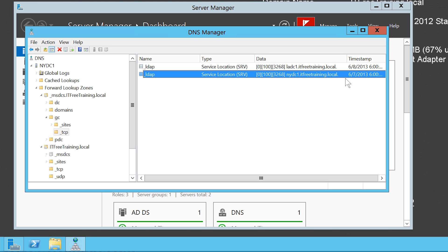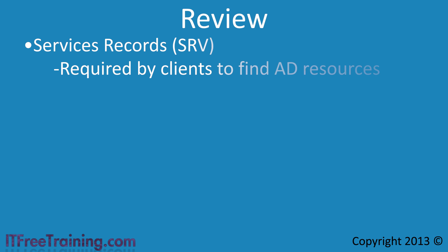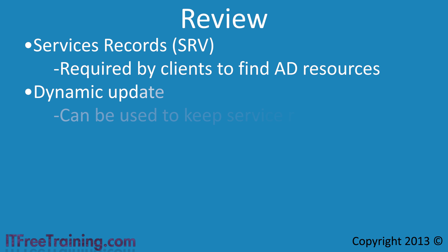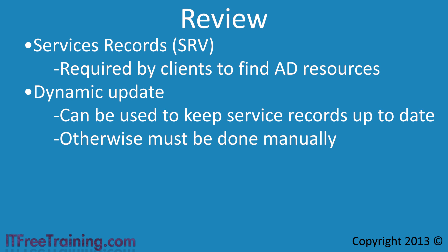This video has looked at how DNS and service records work with Active Directory. The main points to remember are that service records are required for clients to find Active Directory resources, and these records need to be present in your DNS server. They can be created using dynamic updates or manually. If you create them manually — for example when using a non-Microsoft DNS server — you will need to manually update them whenever there are changes on your network, such as adding, removing, or changing the IP address of domain controllers.